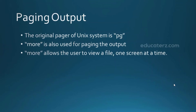Paging output: when working with files with a larger amount of data, the content is displayed on the screen in the form of pages, where each page is of screen size. The original pager for UNIX is 'pg', which has a very limited set of features. A better option is 'more', which is available with almost all implementations of UNIX and UNIX-like systems. More is very simple to use and user-friendly.